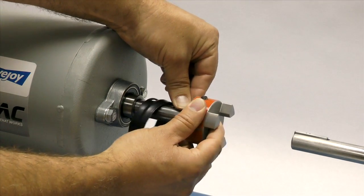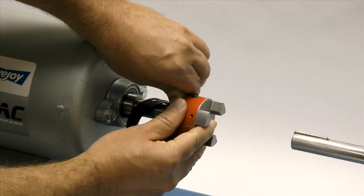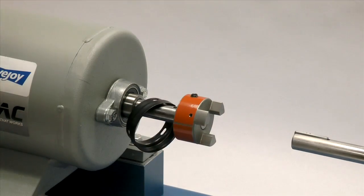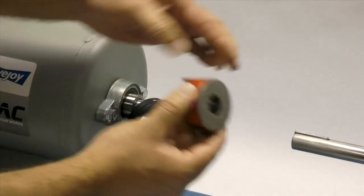Please note that Lovejoy jaw coupling hubs are manufactured with a clearance or slip fit and the hub should slide onto the shafts with little or no difficulty.